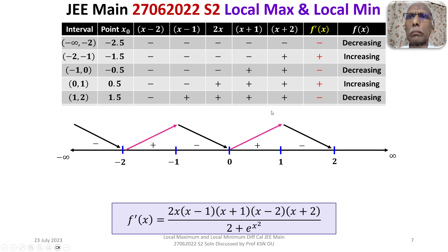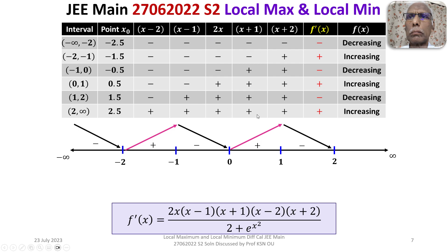For the interval (2, ∞), take test point x = 2.5. Then: (2.5 − 2) > 0, (2.5 − 1) > 0, 2·(2.5) > 0, (2.5 + 1) > 0, (2.5 + 2) > 0 — all five factors are positive. The product is positive, so f'(x) > 0 and f(x) is increasing on (2, ∞).